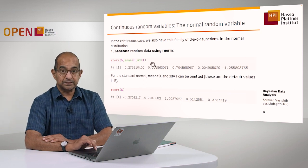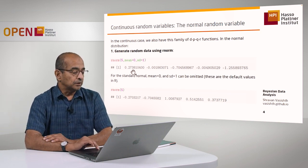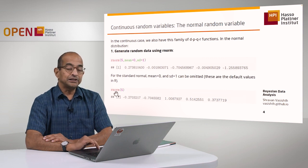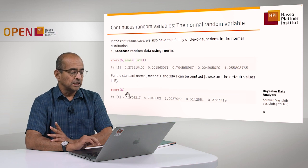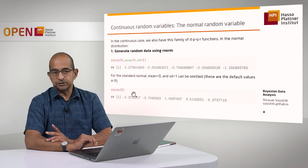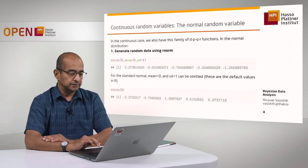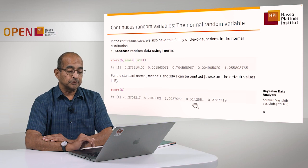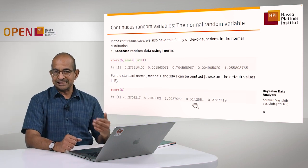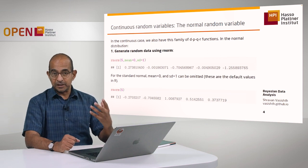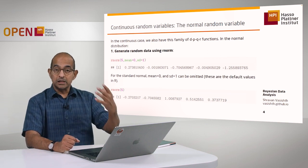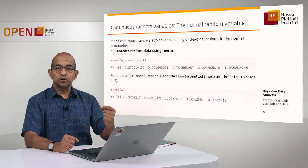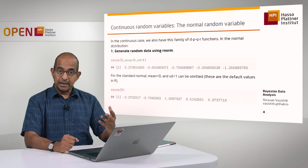If I ran this command multiple times, I would get different numbers each time. In R, the default values for the mean and standard deviation are zero and one respectively, so I could drop those specifications if I want to generate data from a standard normal. I get different numbers each time because I'm generating new random data. This tool is extremely important for us in statistical modeling — when we want to understand the properties of an experimental design, we understand those properties by randomly generating new data from a particular statistical model.